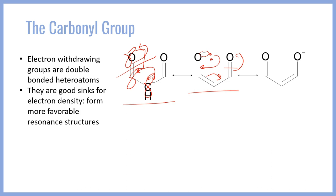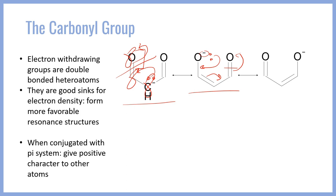Now, this is an anion — a molecule that was already formally negative. However, electron withdrawing groups can also interact with pi systems that are not charged. When it is conjugated with an uncharged pi system, electron withdrawing groups like the carbonyl group give positive character or electron deficient character to the carbons in that pi bond.